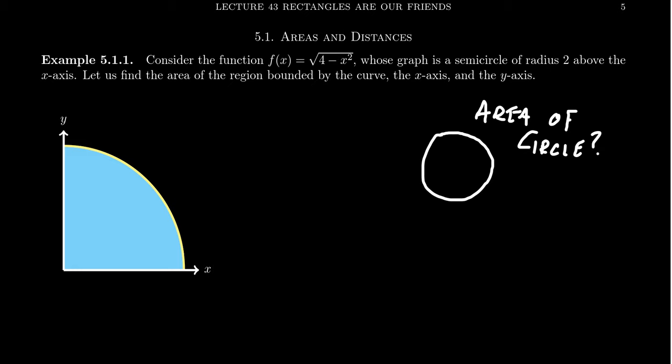We're used to the classic formula that if you take the radius r, the area equals π r². One thing we'll discuss in this chapter is exactly why the area of a circle is π r² — why not π r³, and what is this number π? Today I want to show how one could approximate the number π using area.